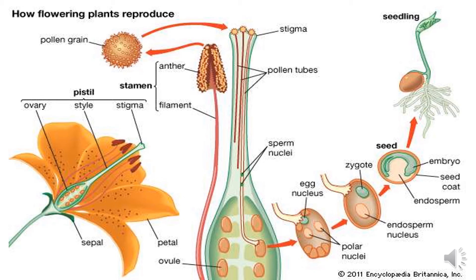You can see here the mating is happening. The egg nucleus and the polar nuclei are present. They mate and form the zygote. After that, the zygote converts into seeds. This is the part of seeds — the embryo and seed coat. After that, it becomes a seedling.